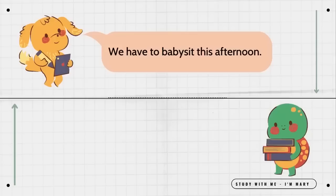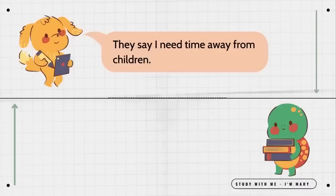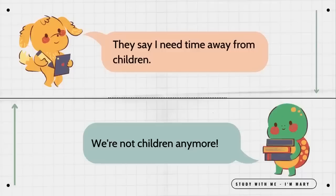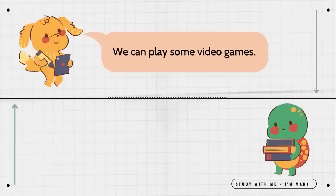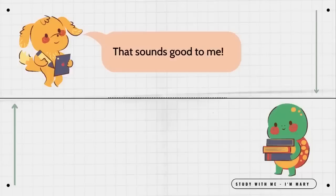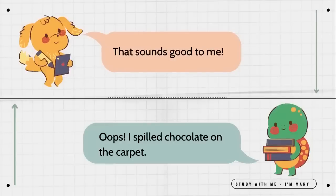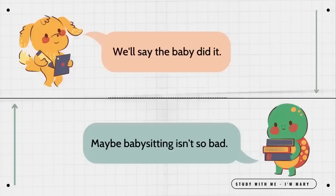We have to babysit this afternoon. Why can't we ever go out with mom and dad? They say they need time away from children. We're not children anymore. I guess that's why we have to watch the baby. What do you want to do first? We can play some video games. Do you want to have ice cream for dinner? That sounds good to me. Oops! I spilled chocolate on the carpet. We'll say the baby did it. Maybe babysitting isn't so bad.